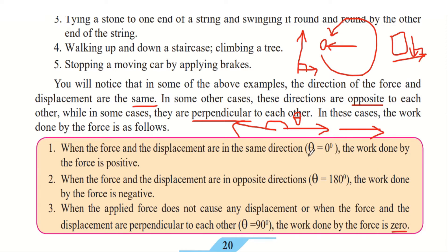To summarize: if theta equals 0, work done is positive; if theta equals 180, work done is negative; and if theta equals 90, work done is zero.